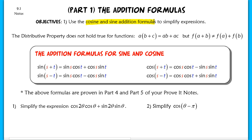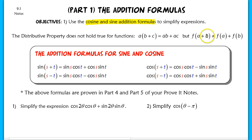Now, just to start off, we know that the distributive property does not always hold true for functions. So even though a times (b plus c) is equal to ab plus ac, for functions, f of (a plus b) does not always equal f of a plus f of b. It usually does not hold true, and the same thing goes for our cosine and sine functions.